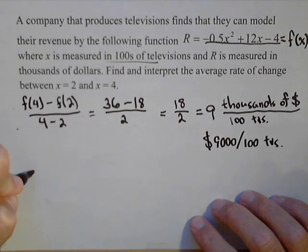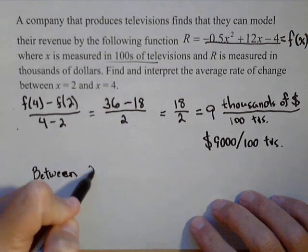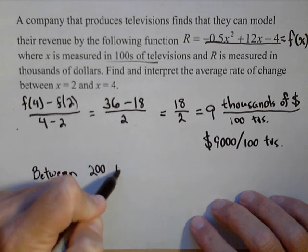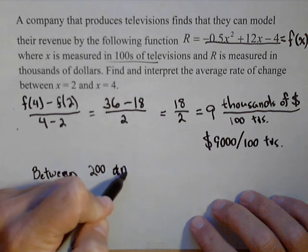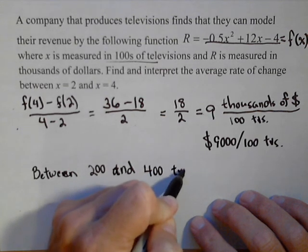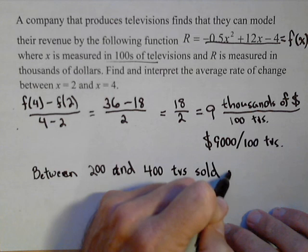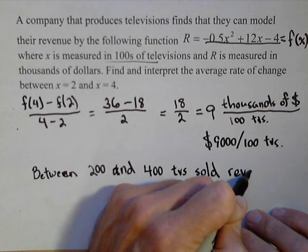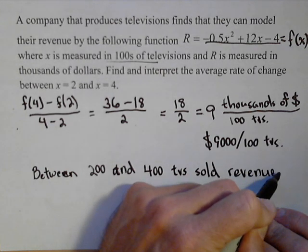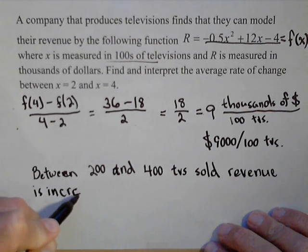So what we can say for our interpretation: between 200 and 400 TVs sold, revenue, because that's our output. Our rate of change is always going to be talking about what's happening with our output. Revenue is increasing. We know it's increasing because it's positive.